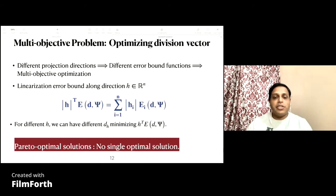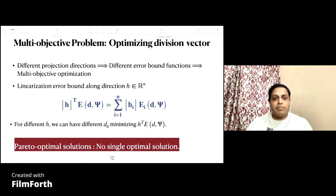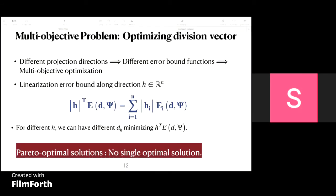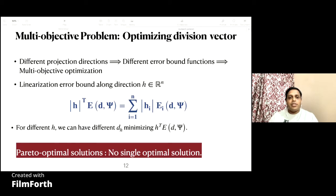However, the linearization error is a multidimensional set, so we have different functions describing the projection of the linearization error along different directions as a function of the division vector, as illustrated in the given formula. This means the problem of optimizing the division vector becomes a multi-objective problem for multiple projection directions H. During optimization, we don't get a single optimal solution but a set of Pareto-optimal solutions corresponding to different projection directions, leading to a dilemma of how to choose one optimal solution.